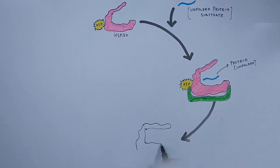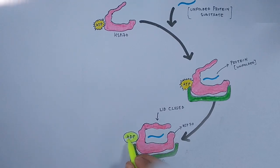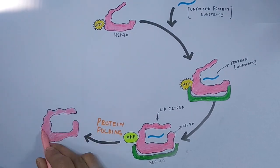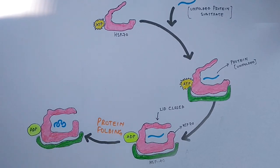In the next step, we get the closed conformation of HSP-70 when ATP gets hydrolyzed. Finally, the protein folding occurs within the HSP-70 cavity when the lid gets closed. After the substrate protein is folded, we need to release this protein out.